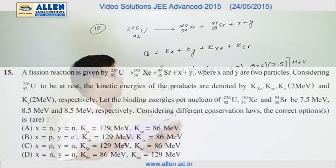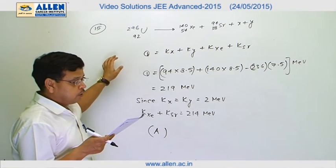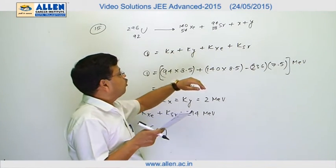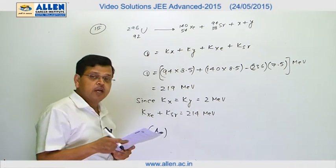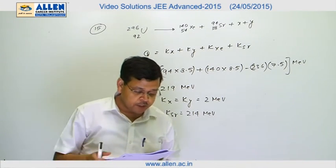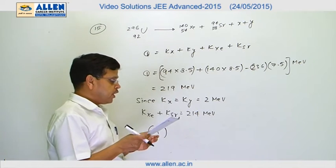The reaction is given as shown here. The kinetic energy of these particles x and y are given, and then we have to find which are these particles x and y, and the kinetic energy of strontium and kinetic energy of xenon.